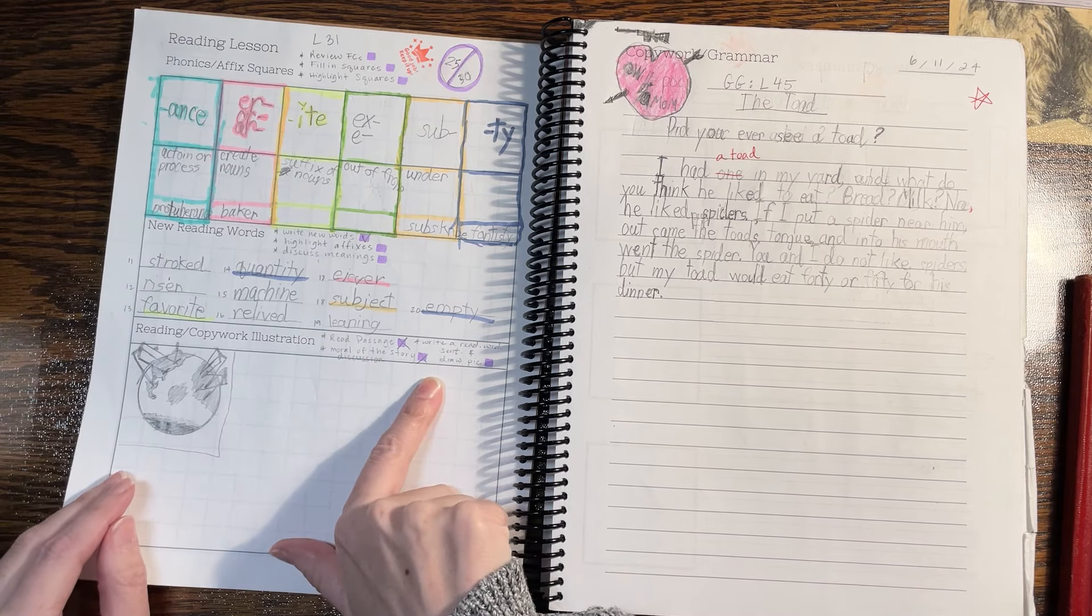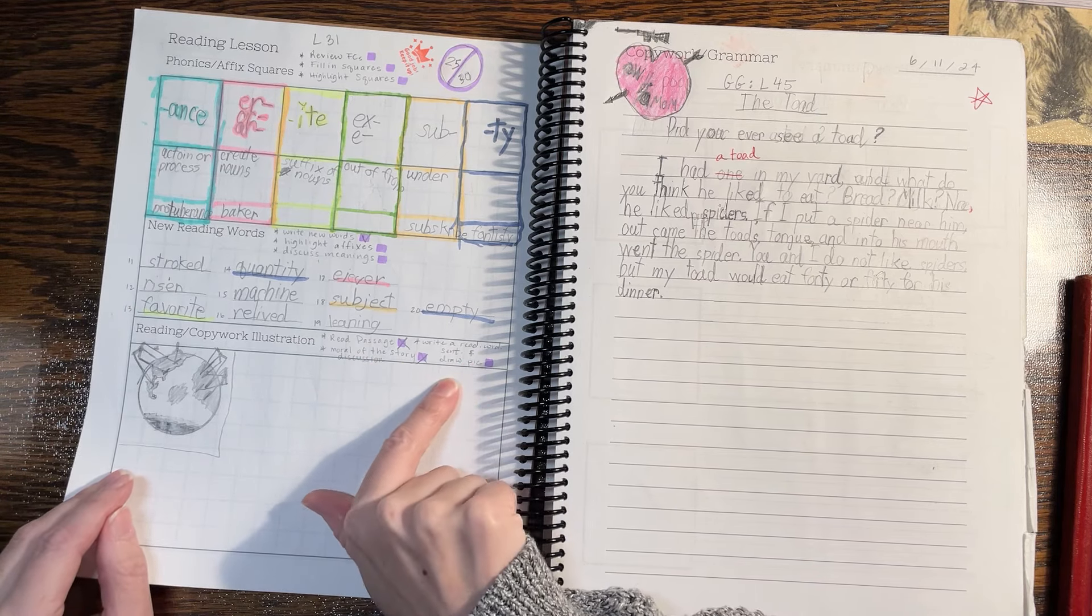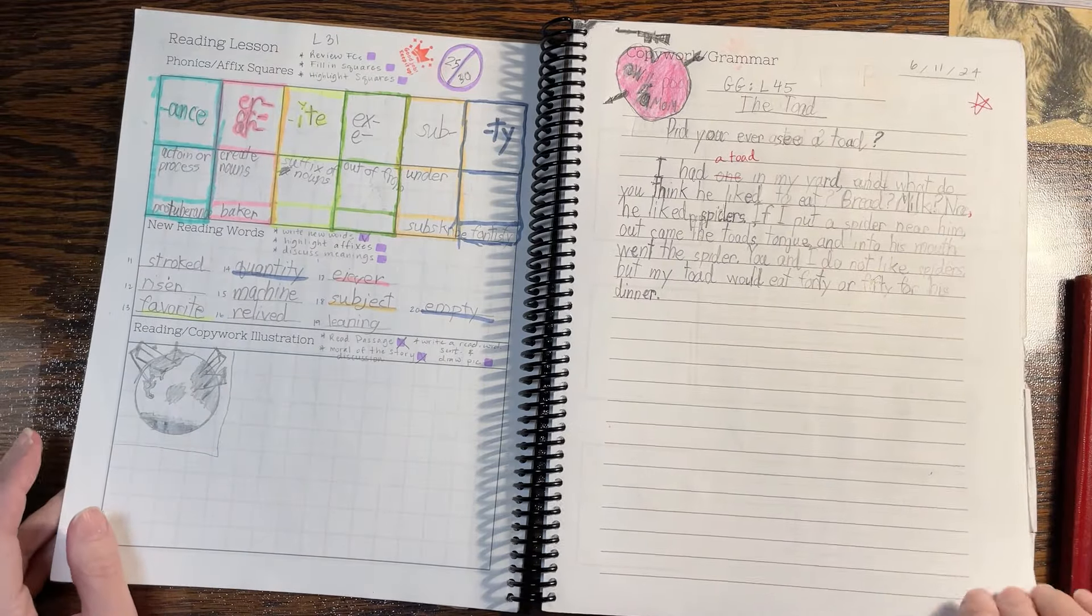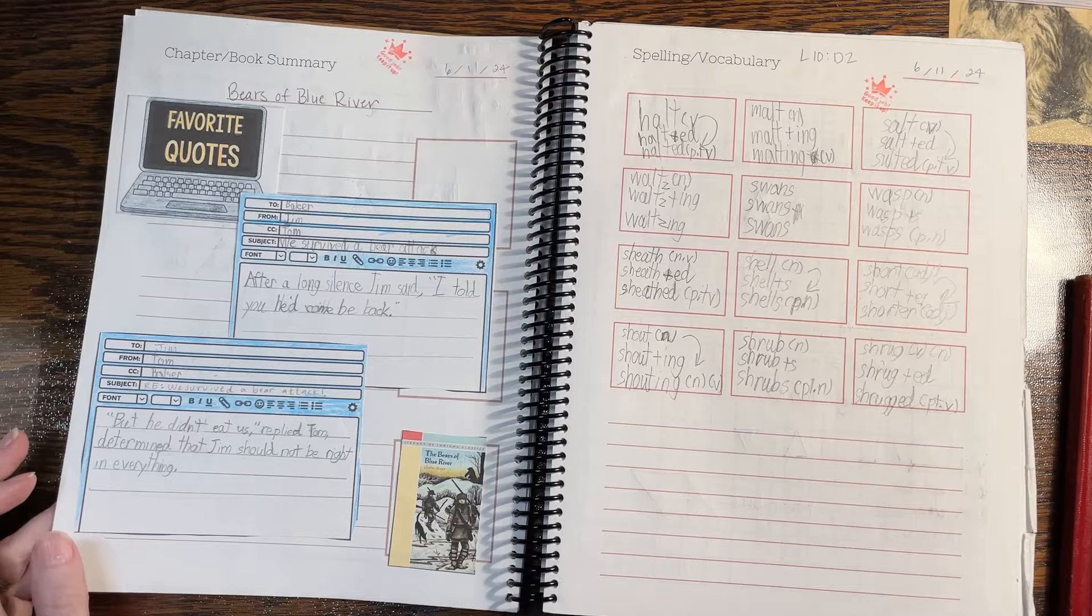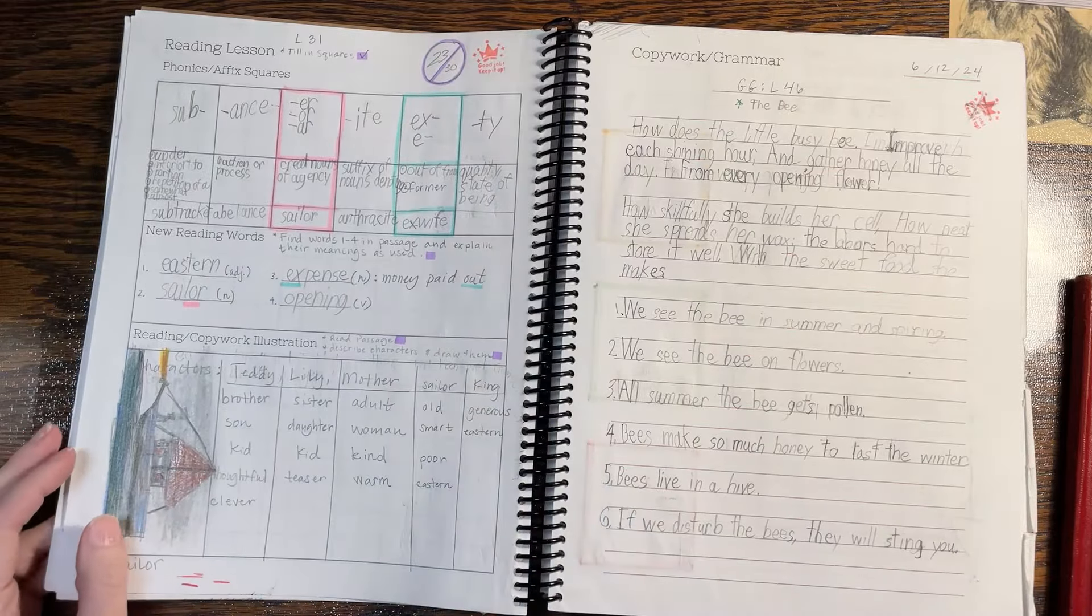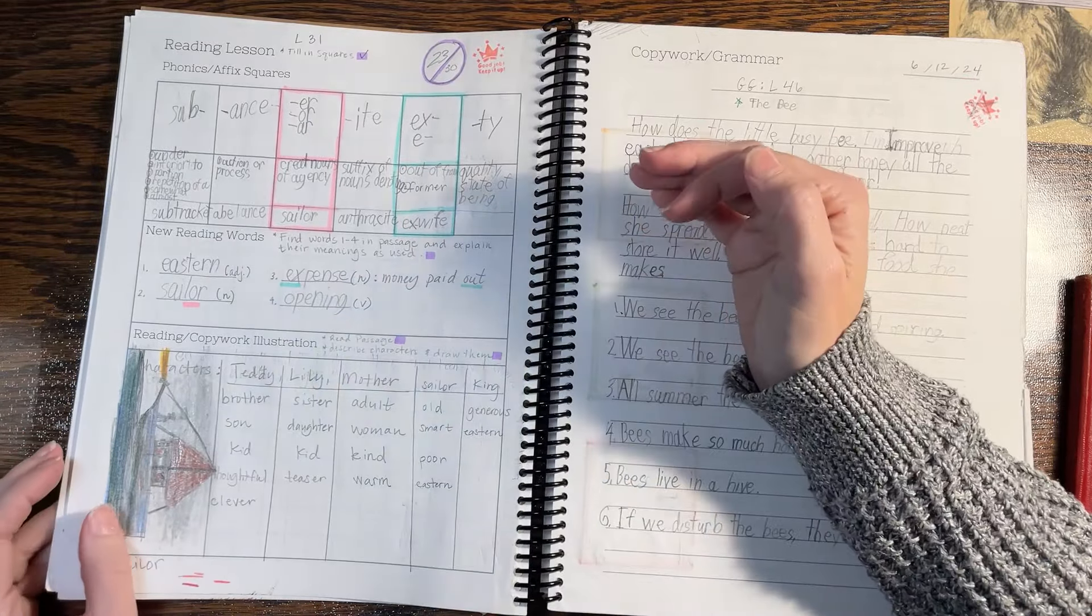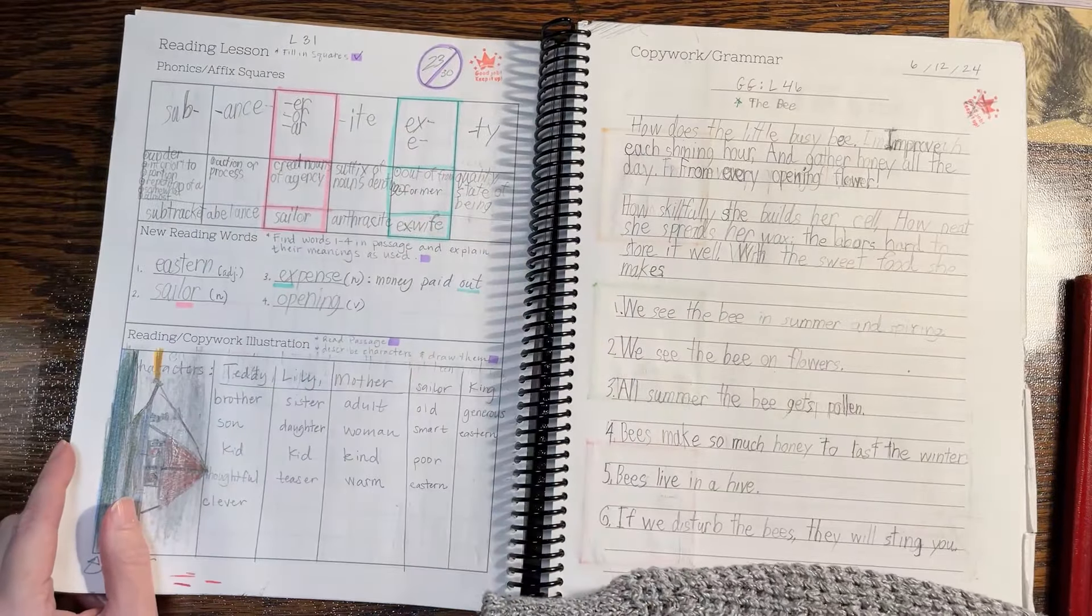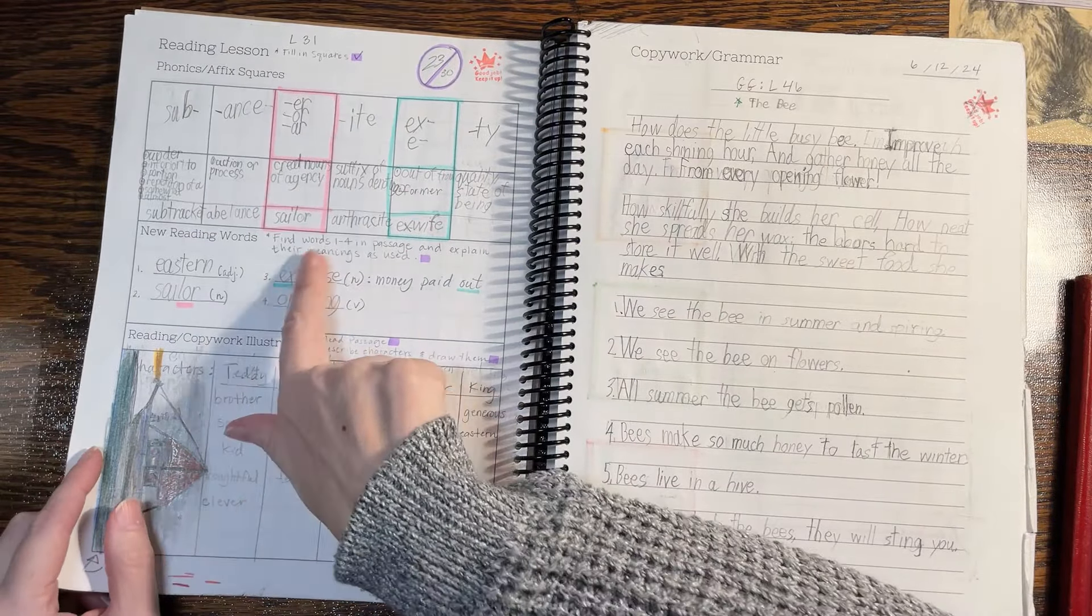Then maybe the next time we'd copy in, we didn't do that wrong pile, right pile. Sometimes when that got to be a lot, like he was up to 30 flashcards at this point. So sometimes we would always include new ones if there was new ones in the passage.